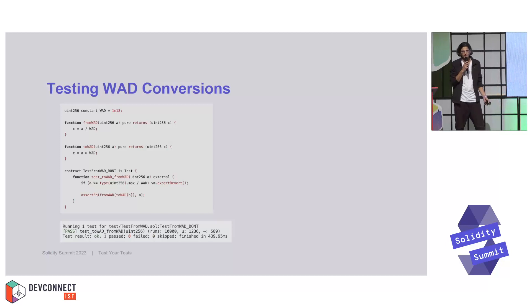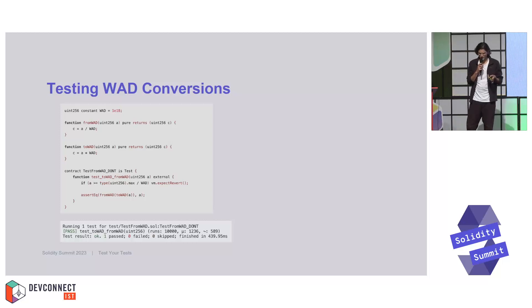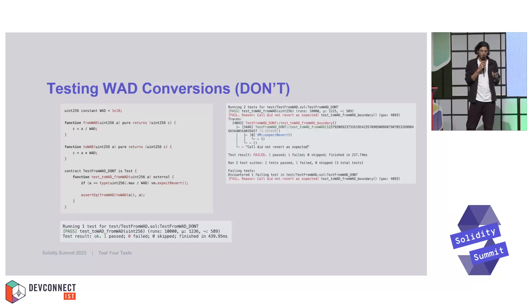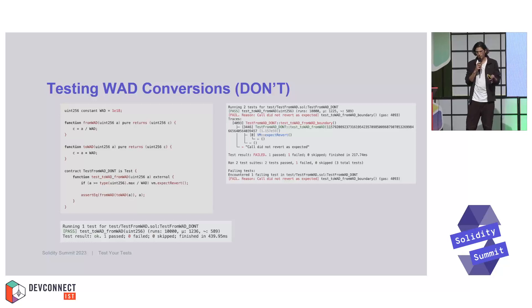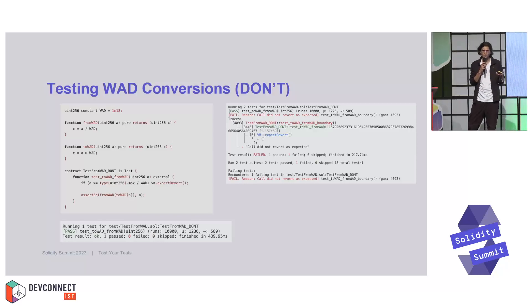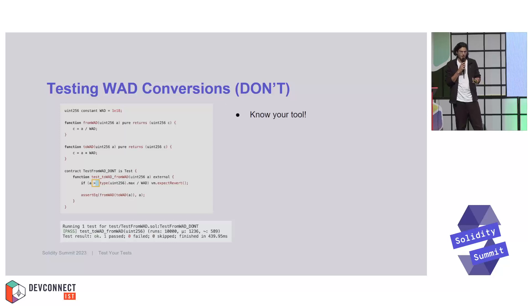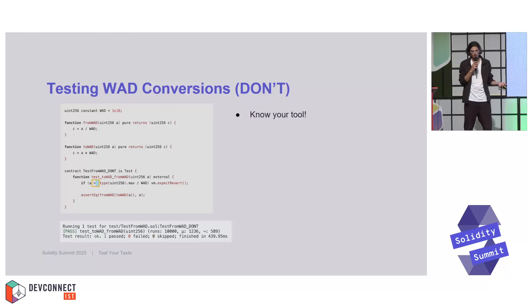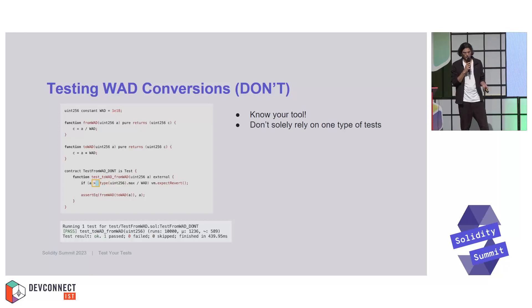What's going wrong here is that you can create an additional unit test which simply calls the fuzz test with a very specific boundary value. We see that the fuzz test passes, but the unit test with that specific value fails — the greater-than-or-equal should have been only a greater-than. This highlights: know your tool, understand your tool, know its strengths and weaknesses. In this case, the tool wasn't performing static analysis on this value. You should definitely not rely on a single type of test.